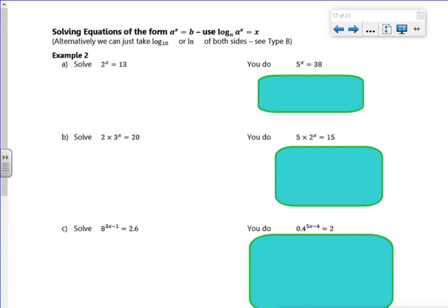To get rid of 2 to the power of, I'm going to take log to base 2 on both sides. So I've got log to base 2 of 2 to the power of x is log to base 2 of 13. For log to base 2 and the 2 to the power of cancel, I've got log to base 2 of 13 there.